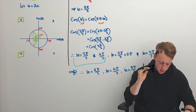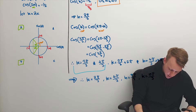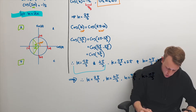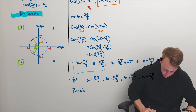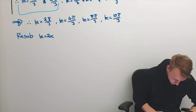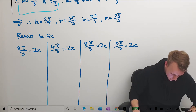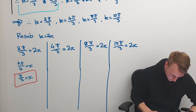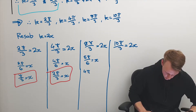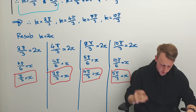Just to reiterate, these are solutions for k — not the solutions we're after. We're after solutions for x. Recall at the very start that k was equal to 2x. So now we re-substitute, and we get a set of four solutions for x, which is very nice.